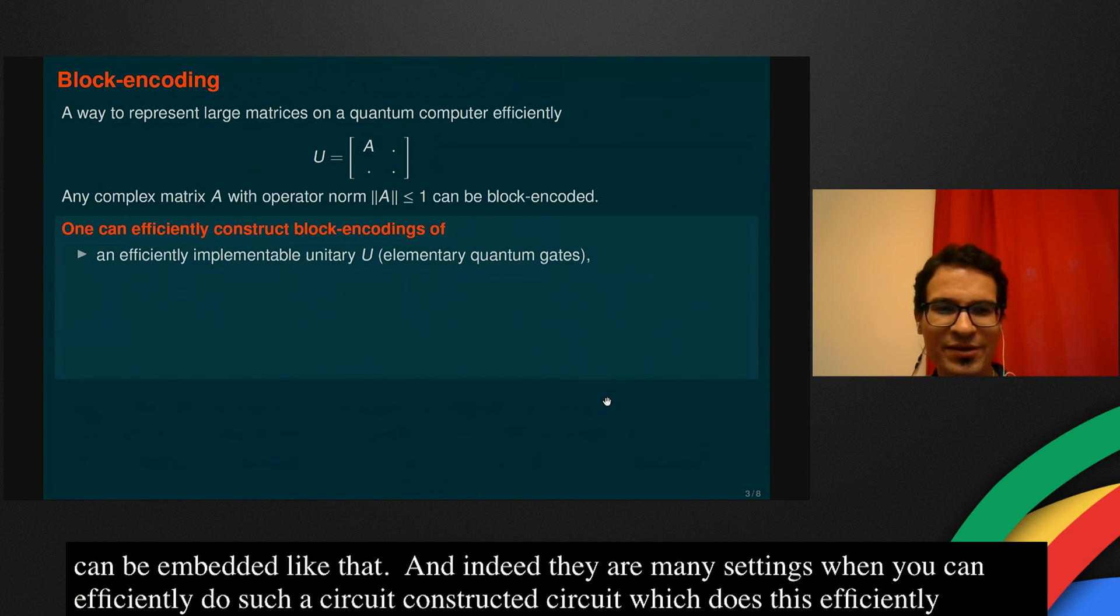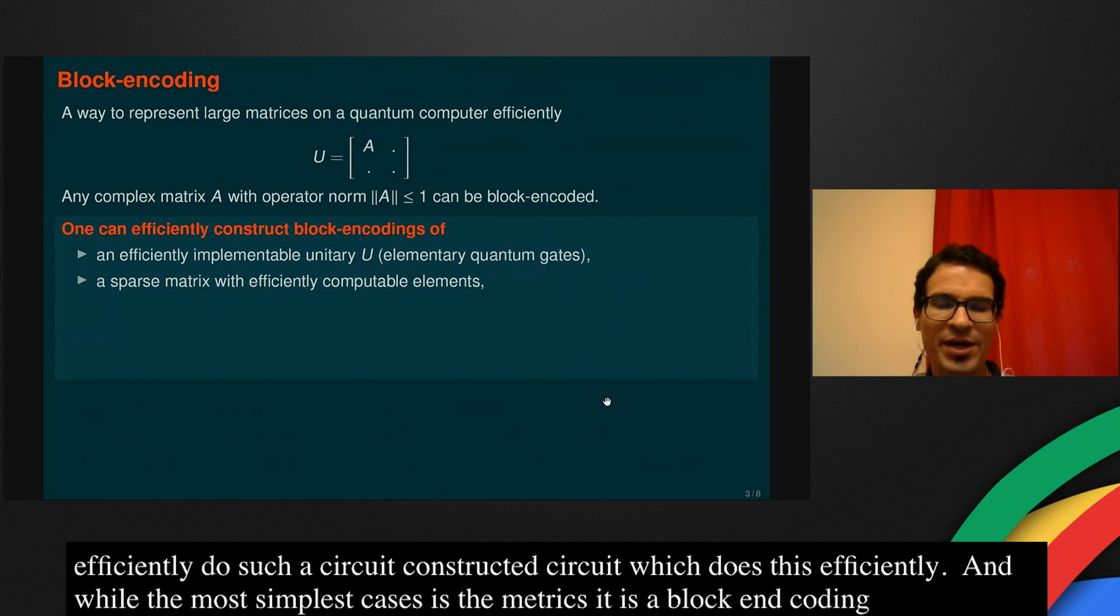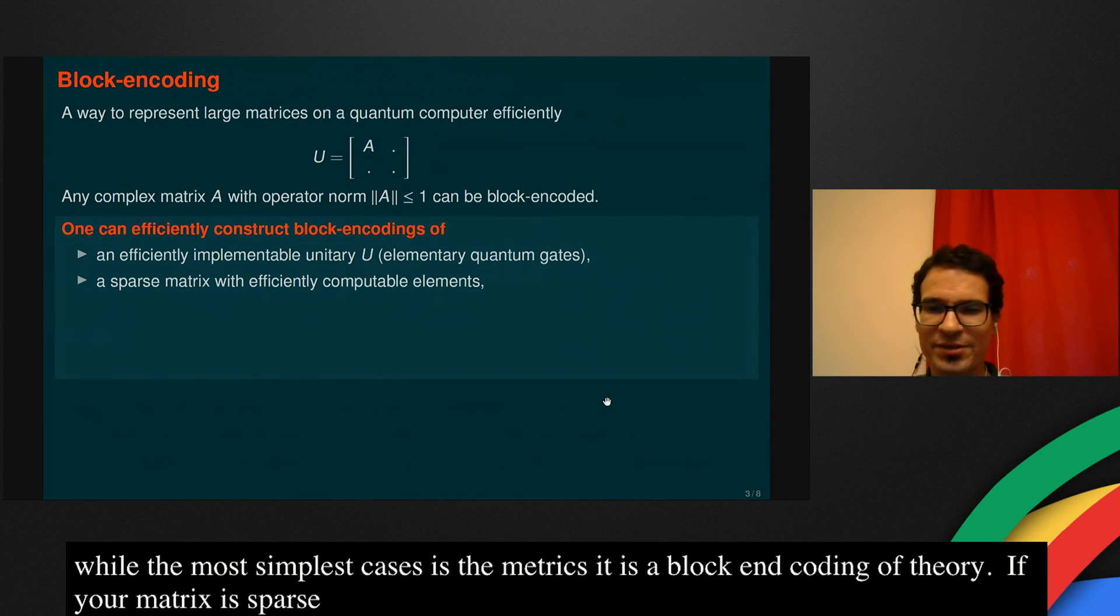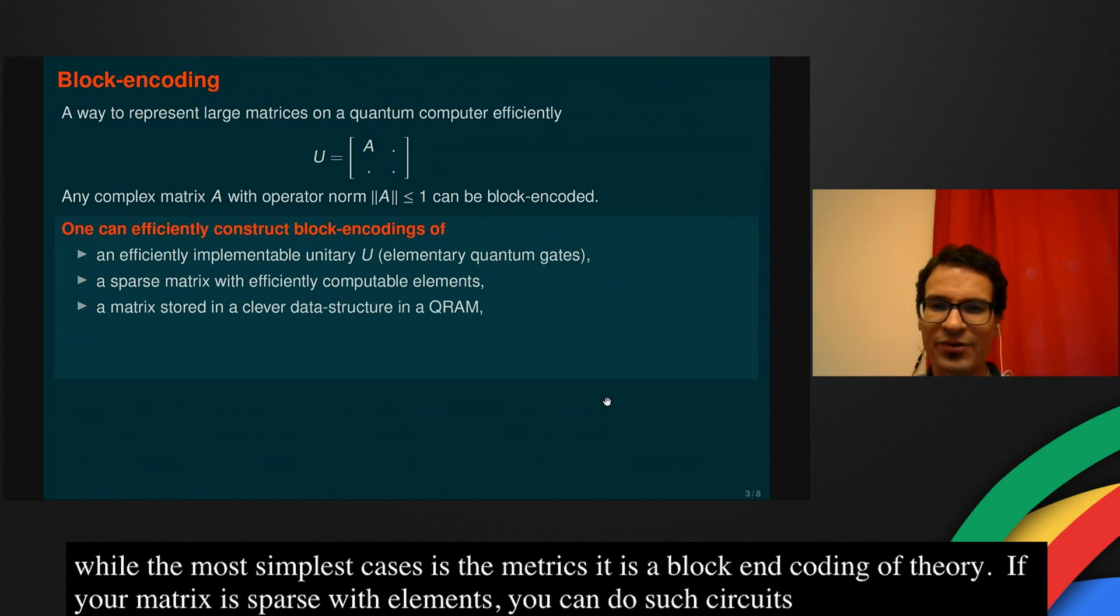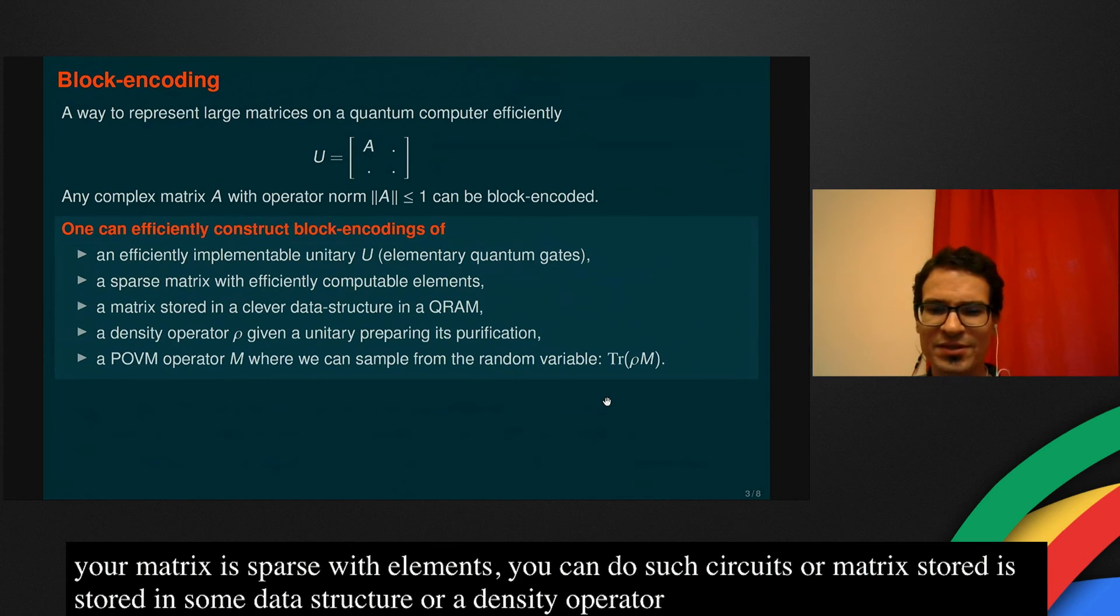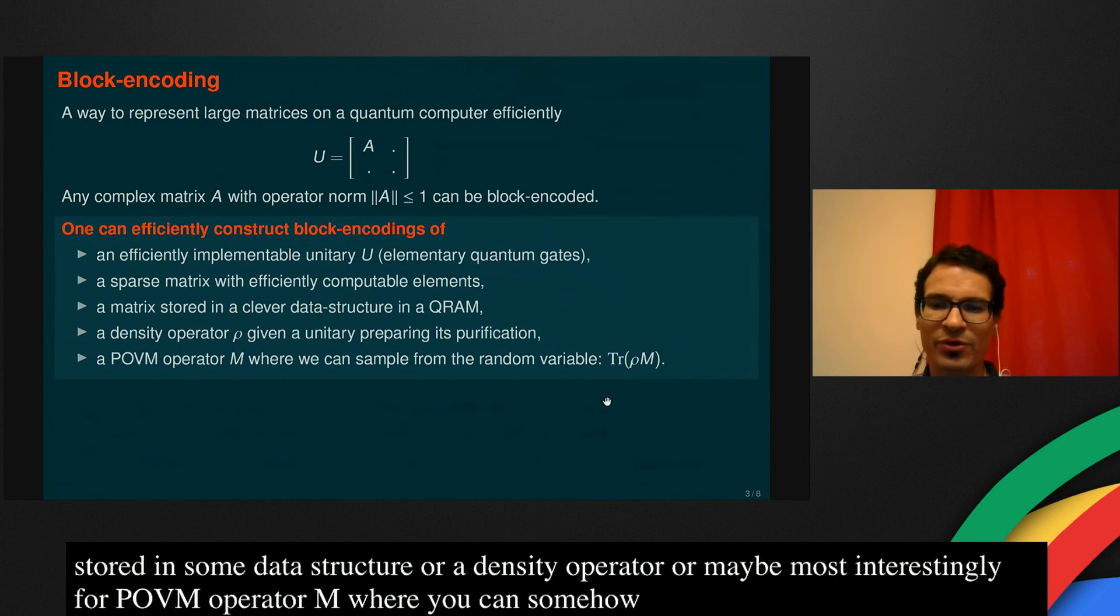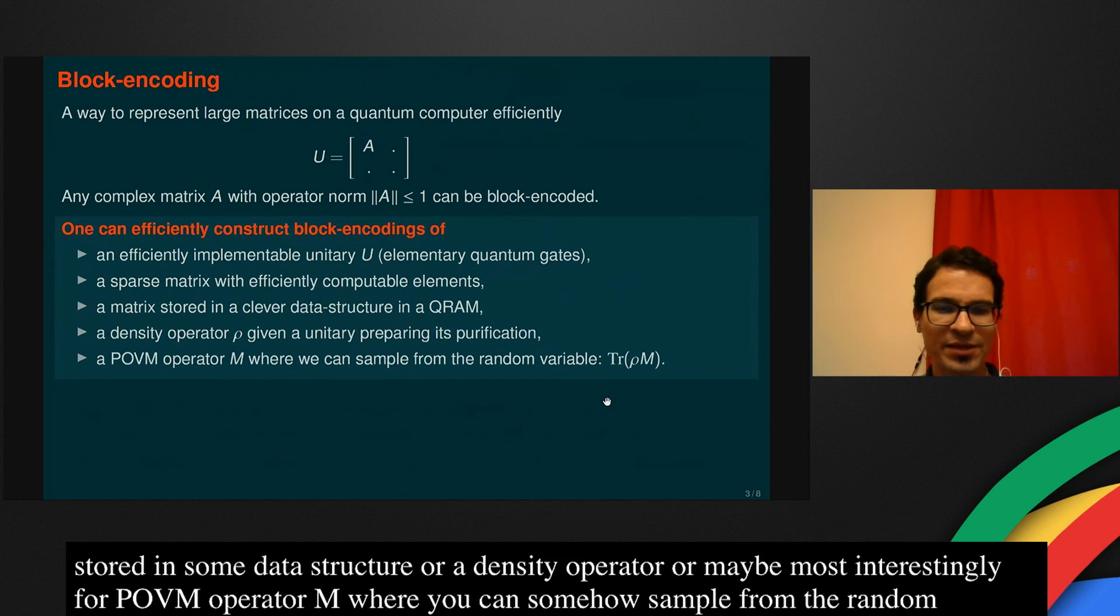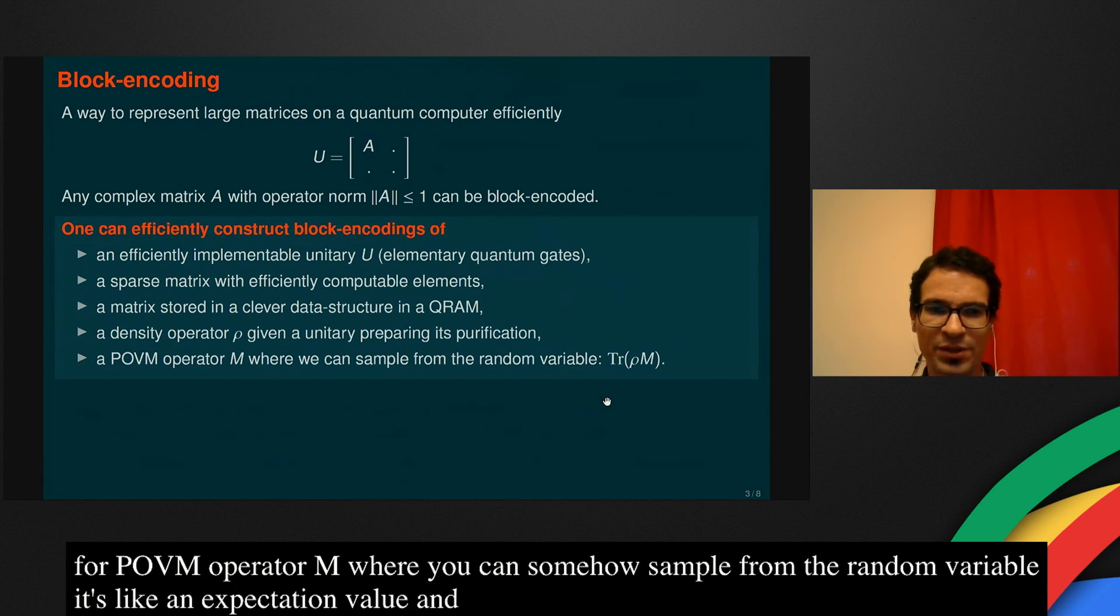The most simplest case is when A itself is a unitary matrix, then of course it's a block encoding of itself, just the whole matrix is unitary. But if your matrix is sparse with efficiently computable matrix elements, then you can also do such circuits. Or if the matrix is stored in some clever data structure in a quantum realm, you can do it. Or it's a density operator that you can prepare a purification of, or maybe most interestingly for physicists, if you have a POVM operator M, where you can somehow sample from a random variable trace ρM. So it's like an expectation value that you can in some way measure. Then you can also implement the block encoding of this POVM operator.